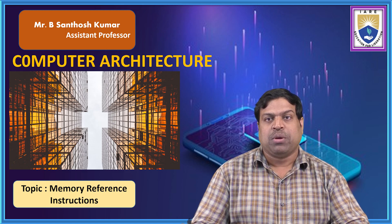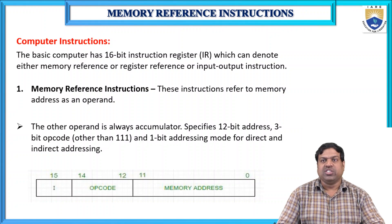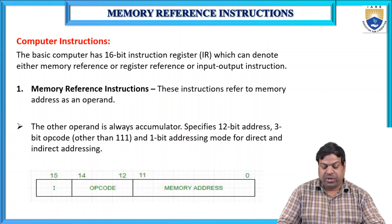Today I am discussing Memory Reference Instructions. The basic computer has a 16-bit instruction register which can denote either memory reference, register reference, or input-output instructions. Memory reference instructions refer to a memory address as an operand, with the other operand always being the accumulator, specified by a 12-bit address, 3-bit opcode, and 1-bit addressing mode for direct and indirect addressing.